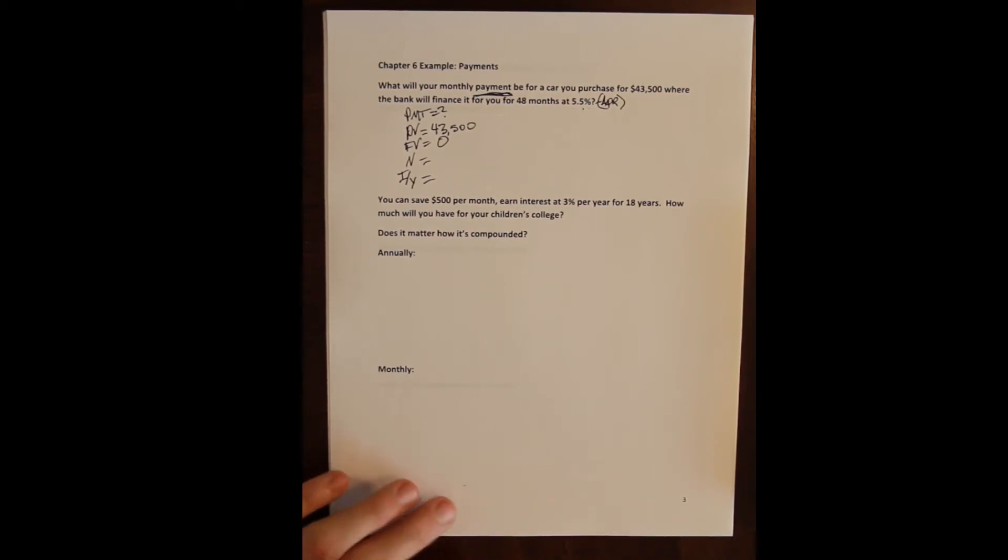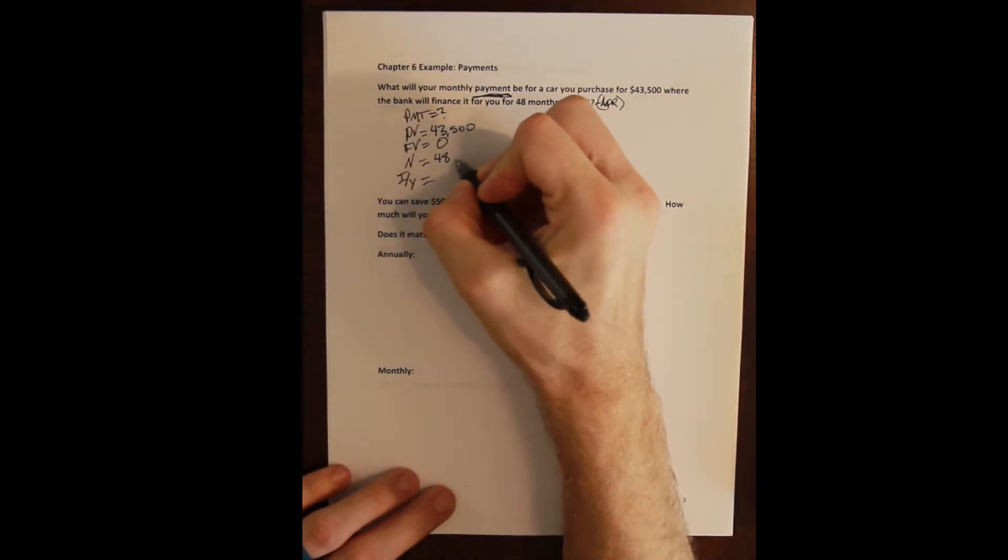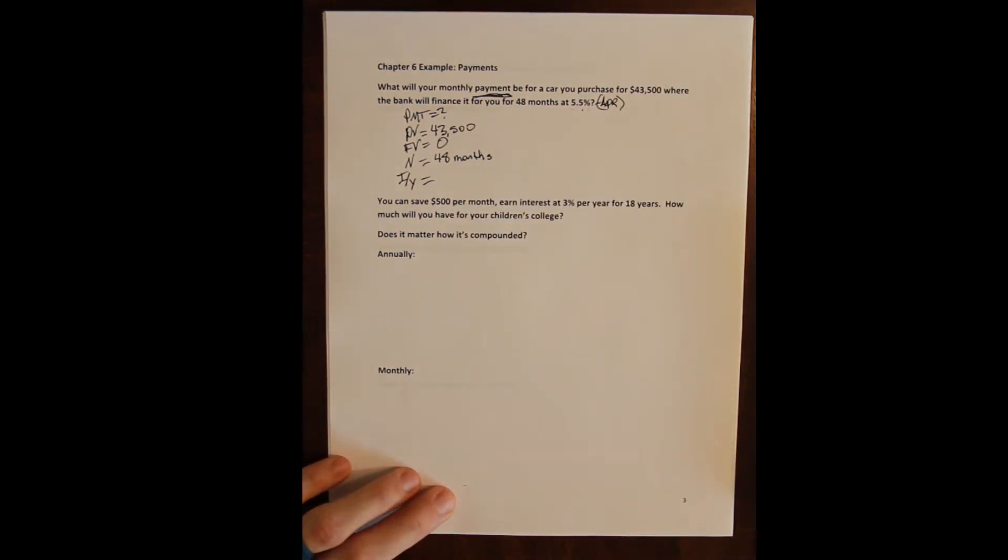Now the compounding period is the month which means our N has to be in months and it was given to us in months. So that saves us some time, 48 months.